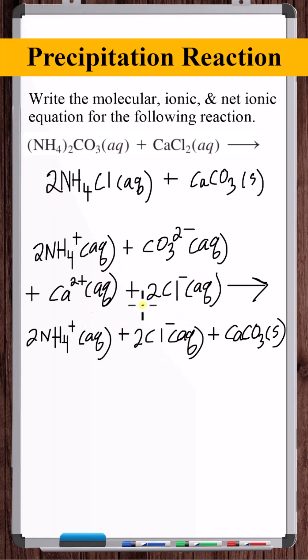This is the ionic equation. For the net ionic equation, cancel the spectator ions. This is the net ionic equation.